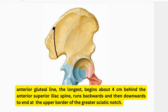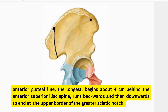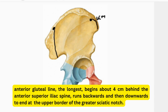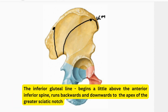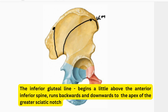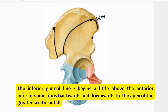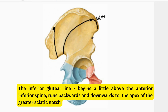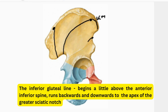Then we have the anterior gluteal line, starting from 4 cm behind the anterior superior iliac spine, running backward and downward, and ending at the upper border of the greater sciatic notch. Then we have the inferior gluteal line, starting a few centimeters above the anterior inferior iliac spine, running backward and ending at the apex of the greater sciatic notch.